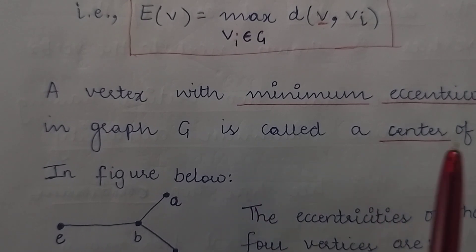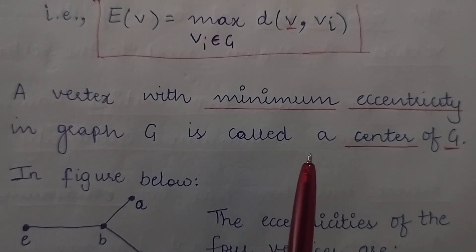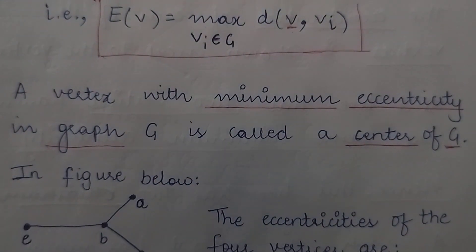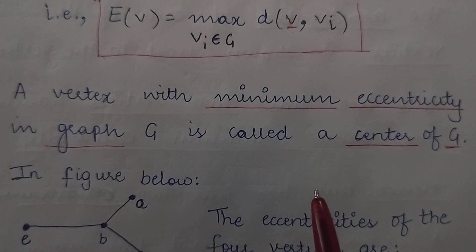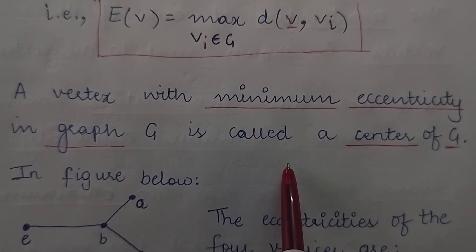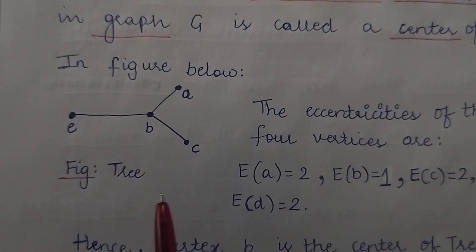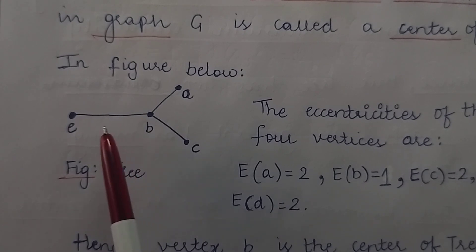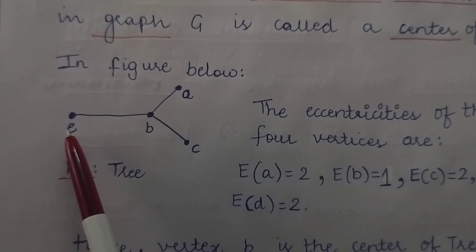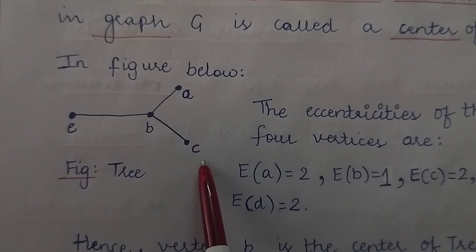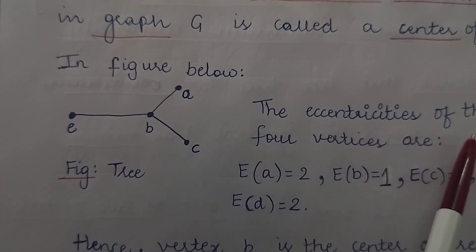The vertex with minimum eccentricity in a graph G is called the center of G. So out of all the available eccentricities, the vertex with minimum eccentricity will be called the center of the graph. If I consider this particular tree, it has the vertices E, B, A and C, and we can easily find out their eccentricities.